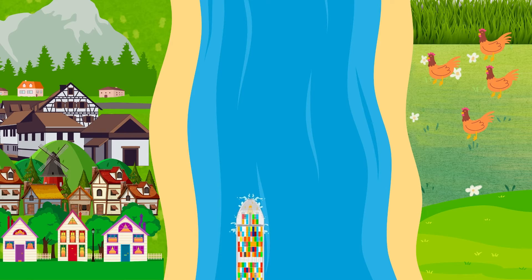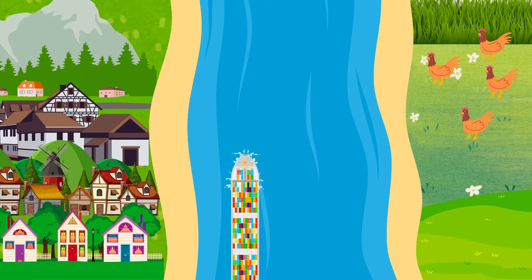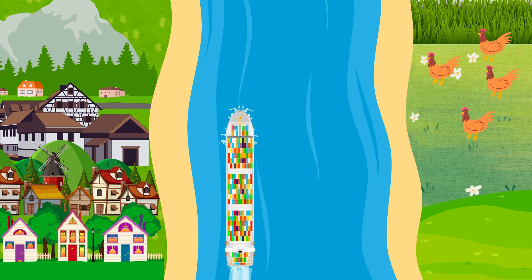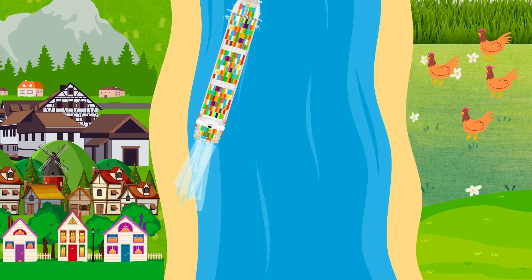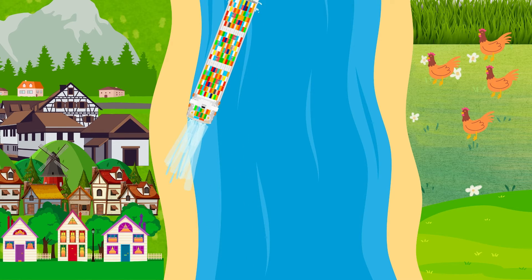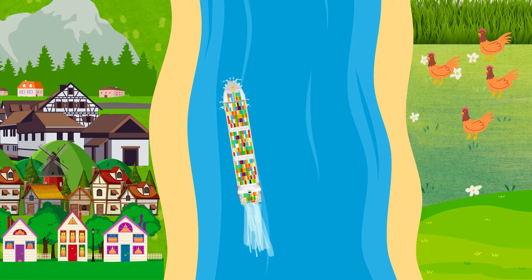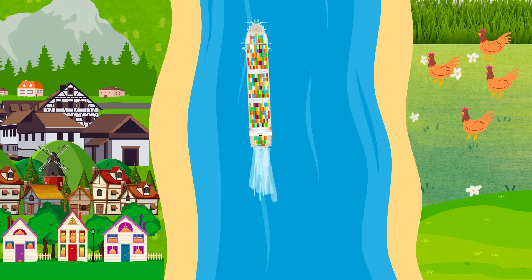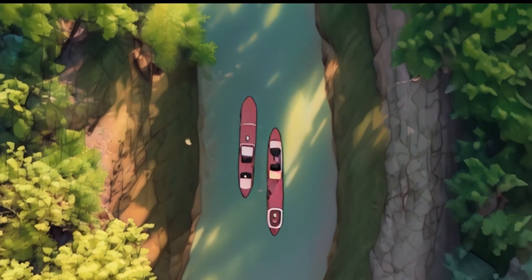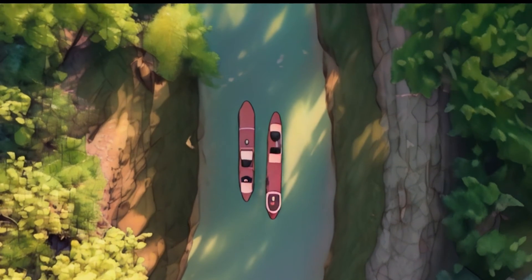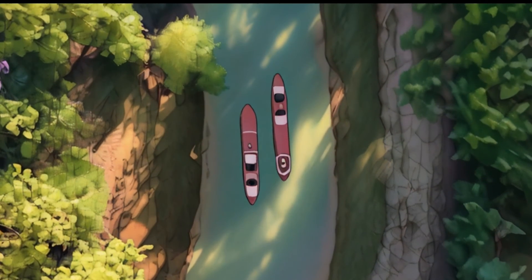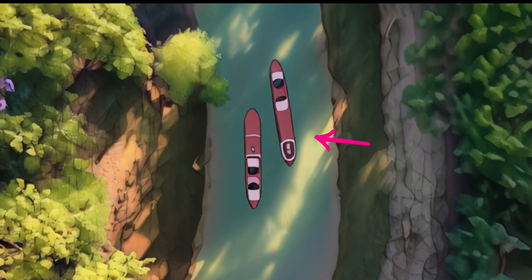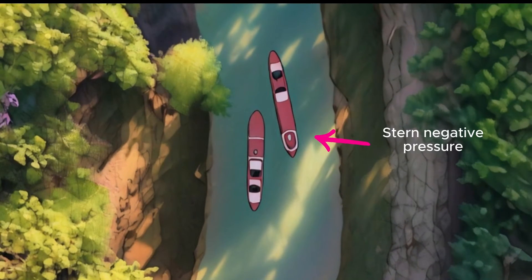Bank suction is the tendency of the stern of a ship to swing toward the near bank when operating in a river or constricted waterway. Basically, it is the opposite of the bank cushion effect. That's why we can see that it happens so quickly, since all the forces present are in harmony for a collision to occur.